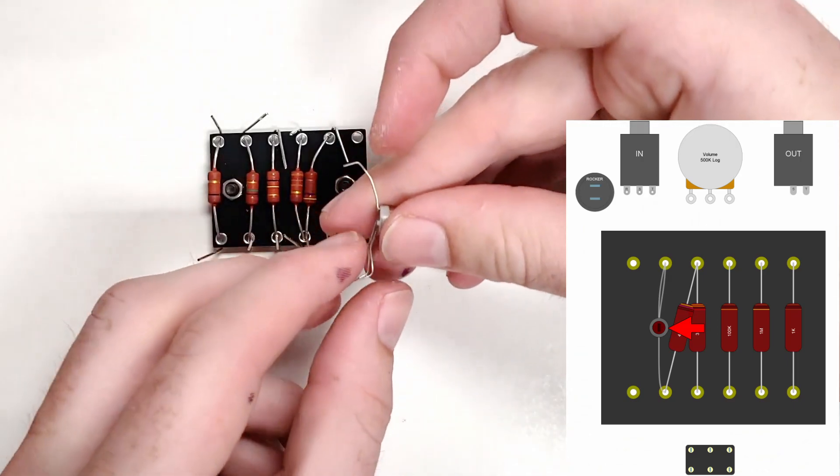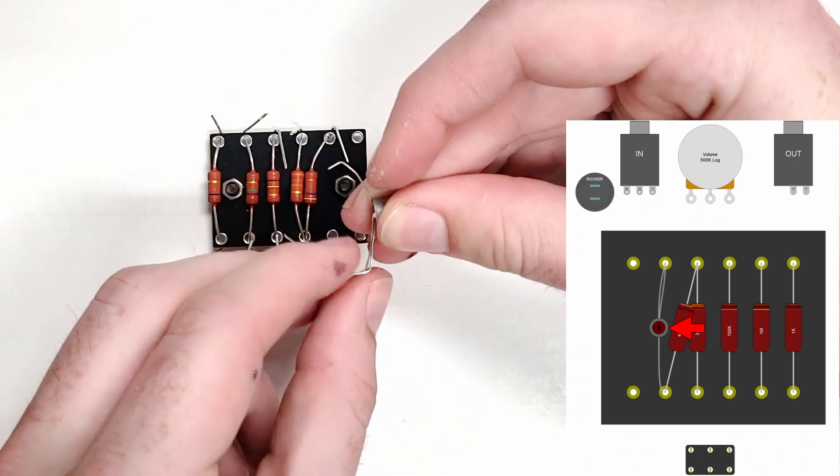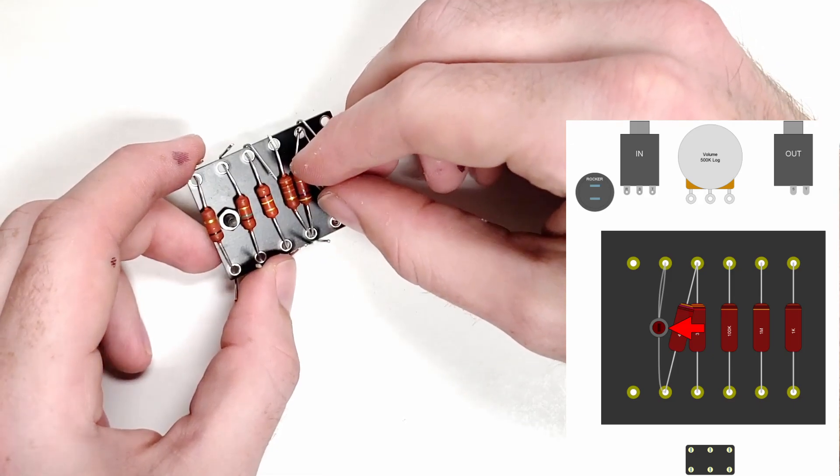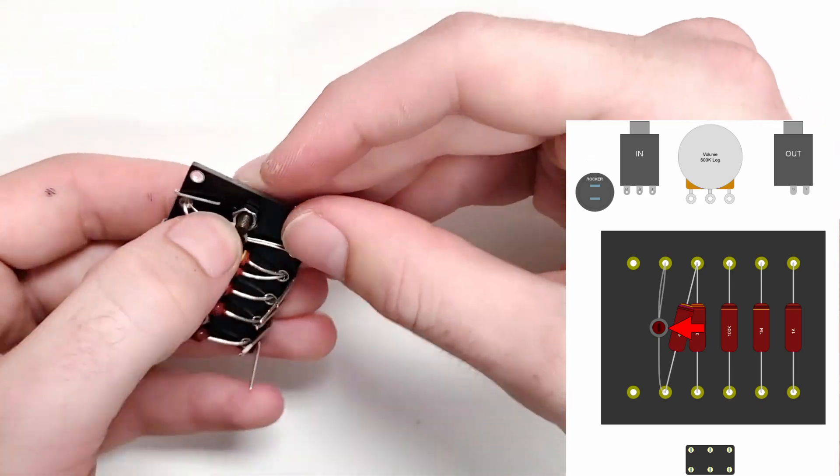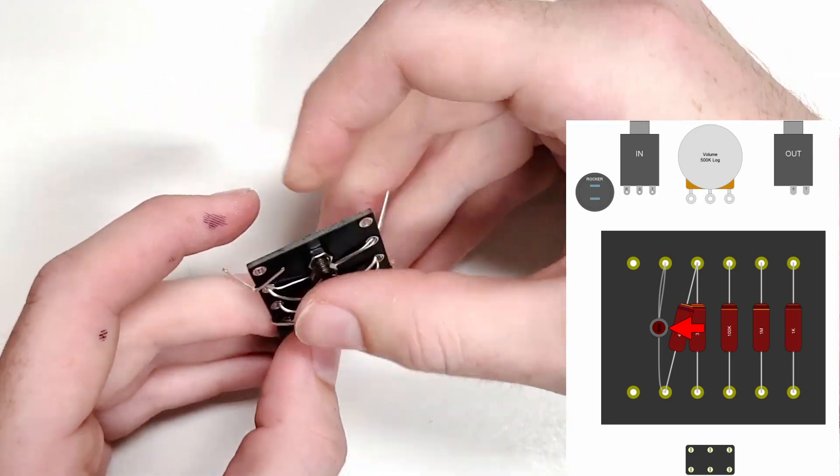In place of the 8.2 kiloohm resistor found in the original Arbiter fuzz face circuit, I'm using a 10k trim potentiometer to allow for bias adjustment. The leads are bent just slightly to make it into the eyelet holes and the leads are bent outward as much as possible to secure it.